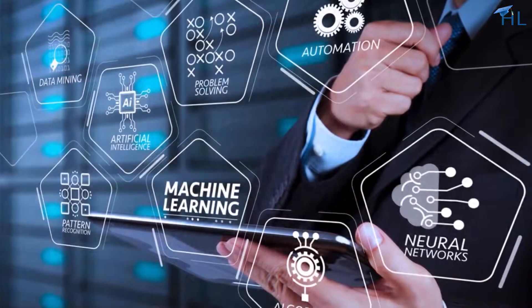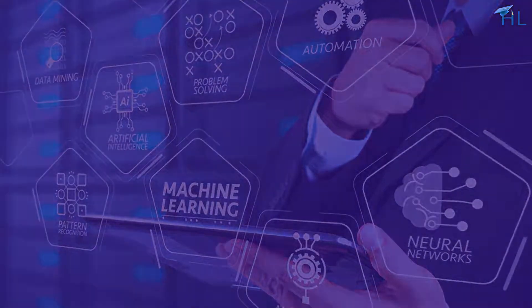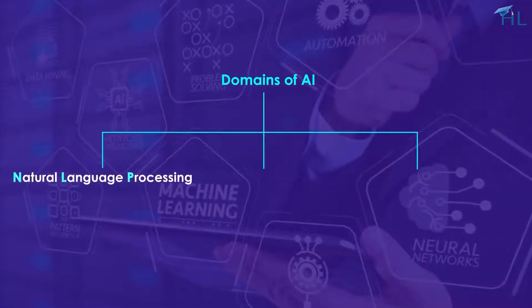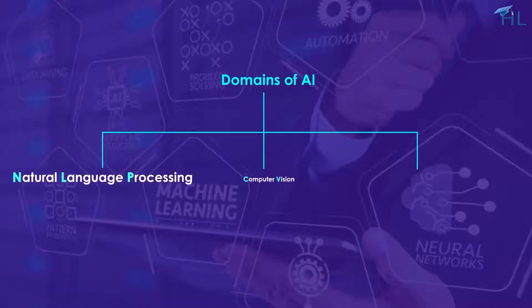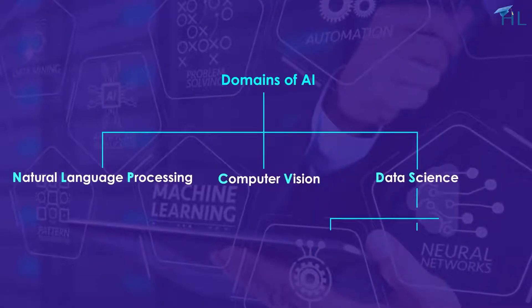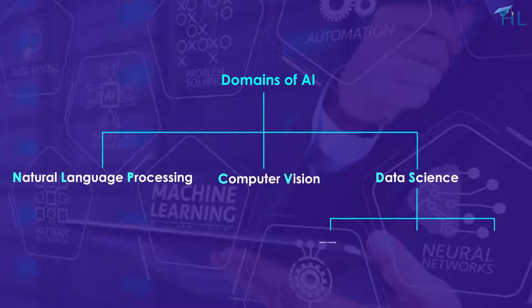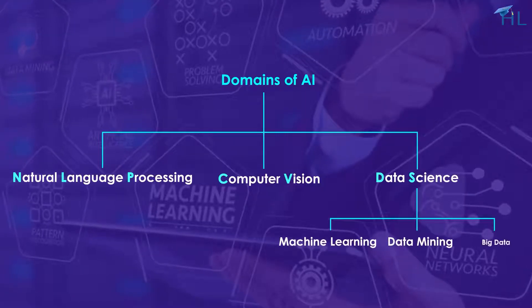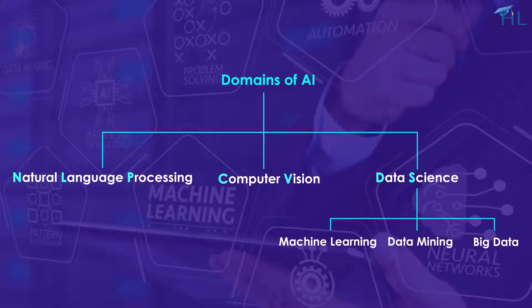To summarize, we've learned about three domains of AI: natural language processing, computer vision, and data science, and its subdomains — machine learning, data mining, and big data. Knowing about these domains provides a foundational knowledge of how AI works and its various applications in everyday life.